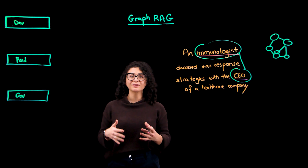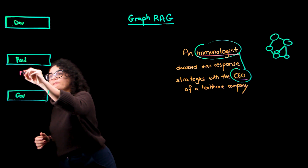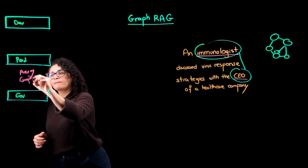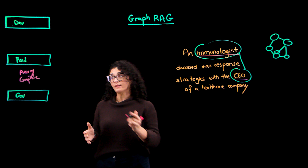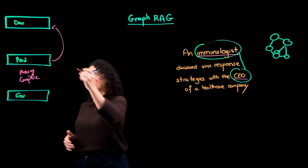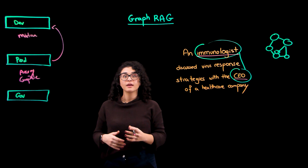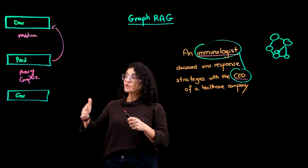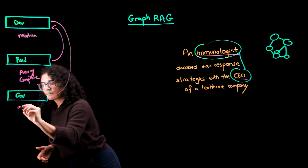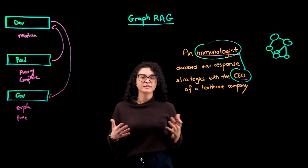Going back to production, development, and governance: GraphRAG provides higher accuracy and more complete answers at runtime. From a development perspective, once you've built the graph, it's easier to maintain than with traditional RAG. And when querying it, you will get better explainability, traceability, and access controls.